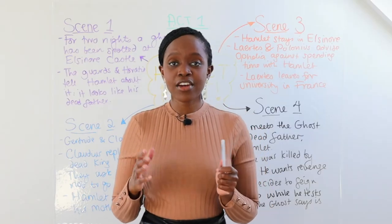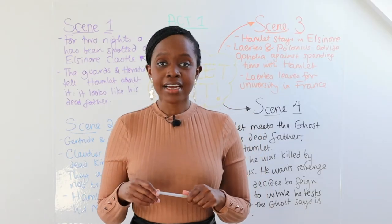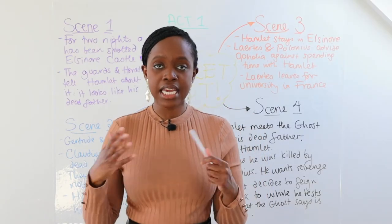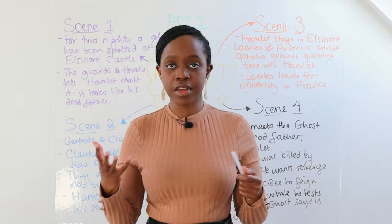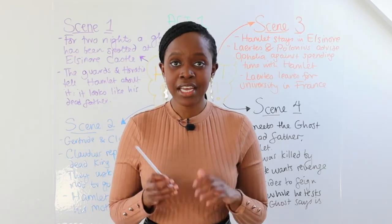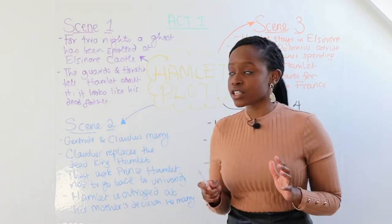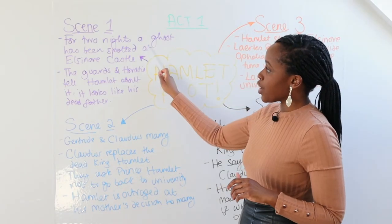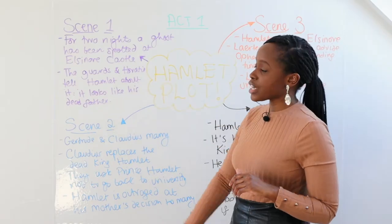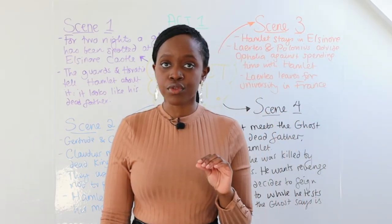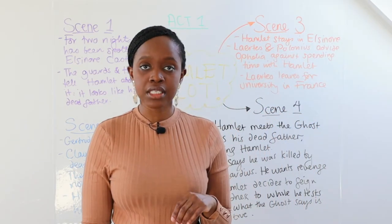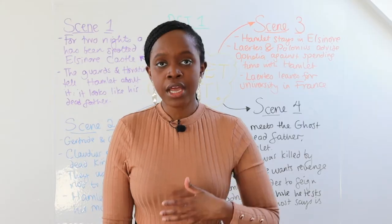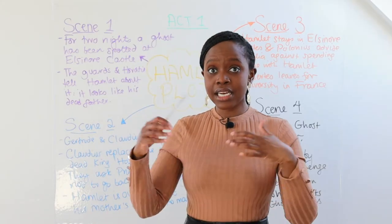Let's examine in a nutshell Act One and what happens in each scene within this act of Hamlet. In Act One, Scene One, we learn that for two nights there's been a ghost in Elsinore Castle. Remember that this play is set in Denmark.